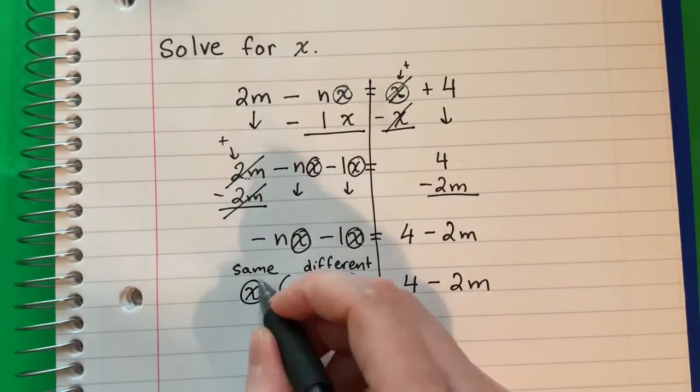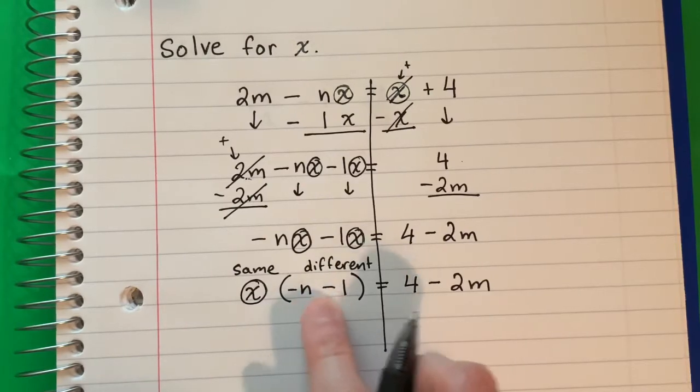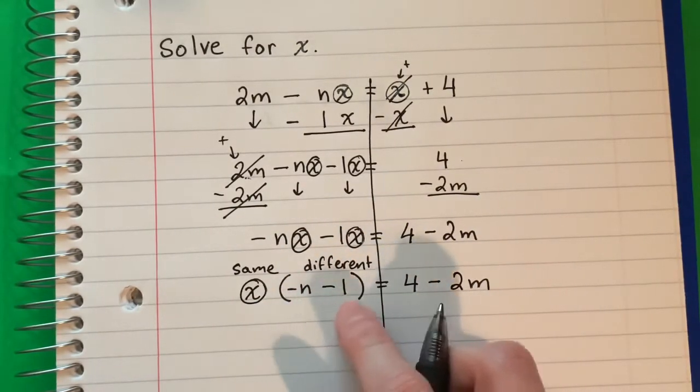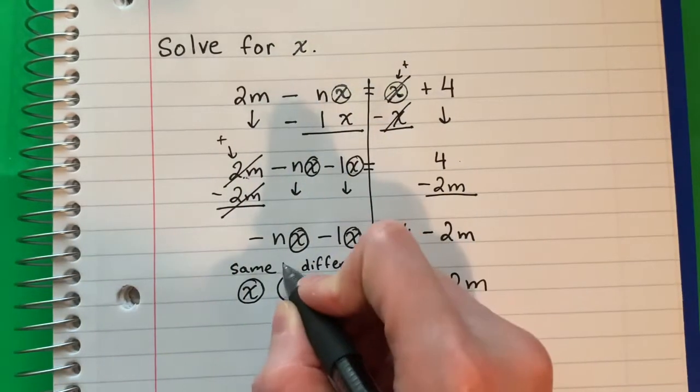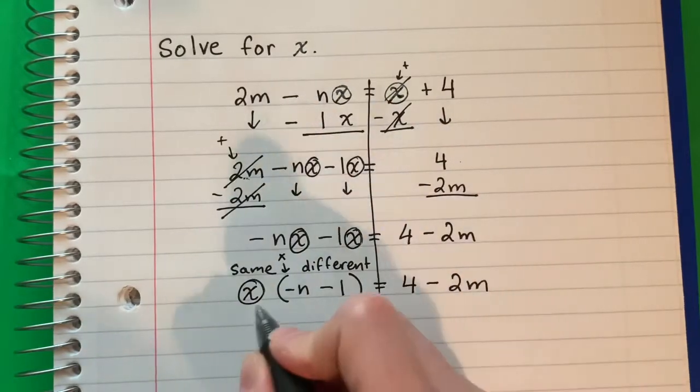I want the x alone. What is with x? I have negative n minus 1 in parenthesis. They are together, in a box. So this is parenthesis. Parenthesis is multiply. The opposite is divide.